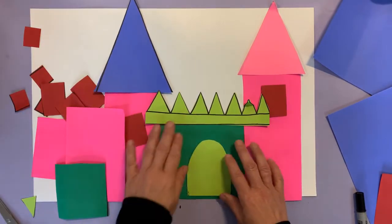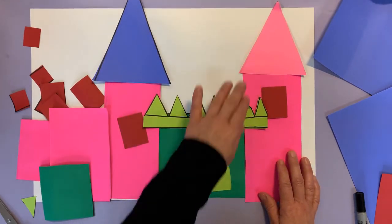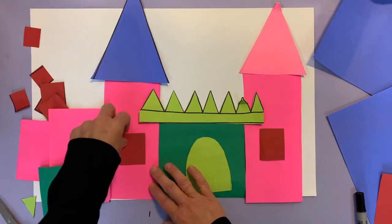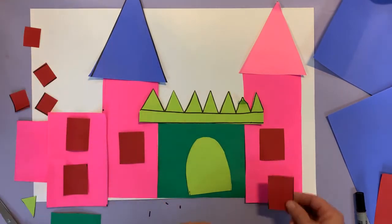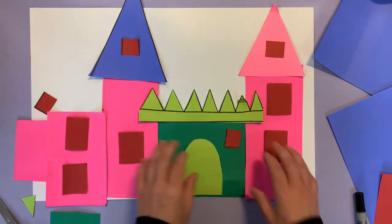I am using a sharpie to show you the shapes, but you can use a pencil. Draw the shapes, then we're going to cut them and assemble the castle together before we use a glue stick.